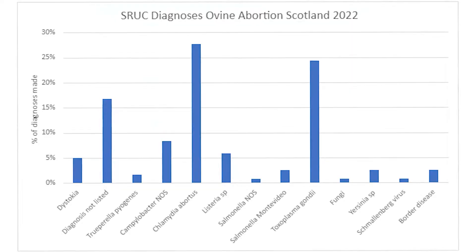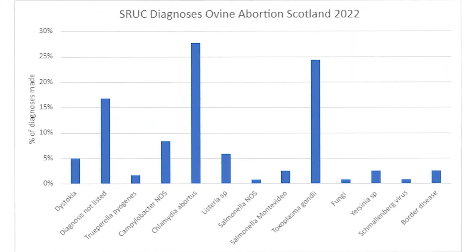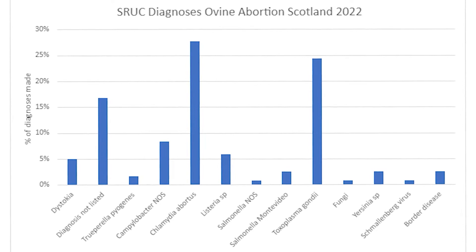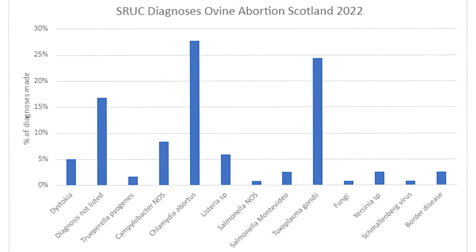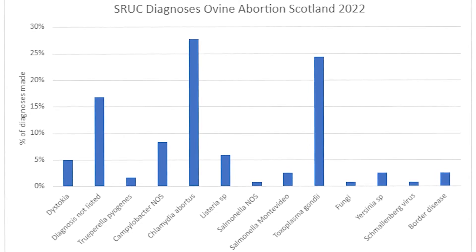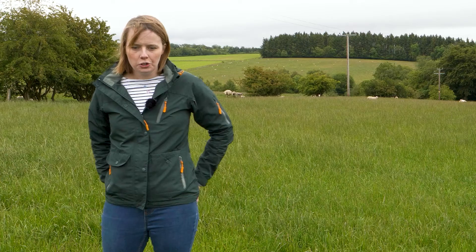Infectious causes would be Campylobacter, Salmonella, and Border disease, and then often we get more sporadic causes of bacterial abortions like Listeria. Illness in the ewe can also be a cause, so it's not always infectious — it can be a non-infectious cause as well.